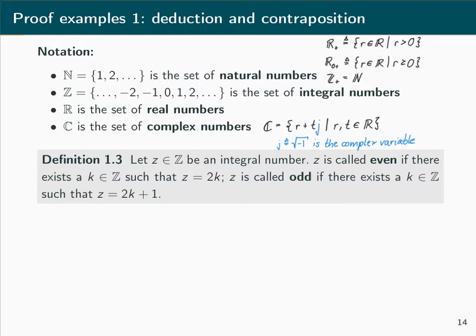For the purpose of our proof examples, we have Definition 1.3, where we define what it means for an integer z to be even or odd. Z is called even if there exists a k in Z such that z = 2k, and z is called odd if there exists a k in Z such that we can write z as 2k + 1.